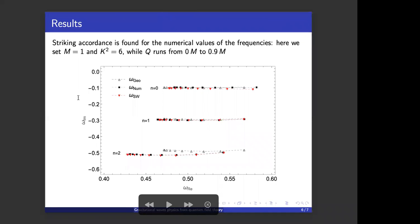So what we did is to compute these quasi-normal modes using the geodesic approximation, the numerical approximation, and also the Seiberg-Witten method and found a striking accordance. Here we set M equals one, k squared equals six, and Q runs from zero to 0.9.